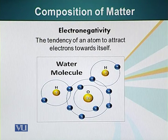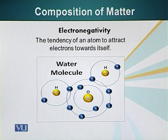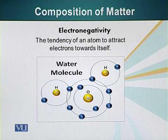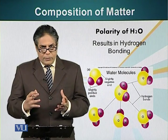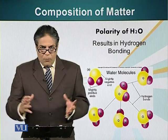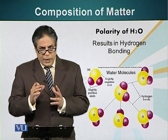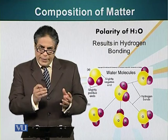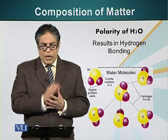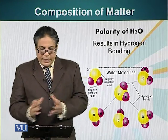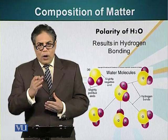This ability of an atom to have a greater pull on the shared pair of electrons is called electronegativity. Oxygen is more electronegative than hydrogen, resulting in a partial negative charge on the oxygen atom. When water molecules are in contact with each other, the partial negative charge on oxygen attracts the slightly positive hydrogen atoms of neighboring water molecules. This attraction results in a weak bond called the hydrogen bond.